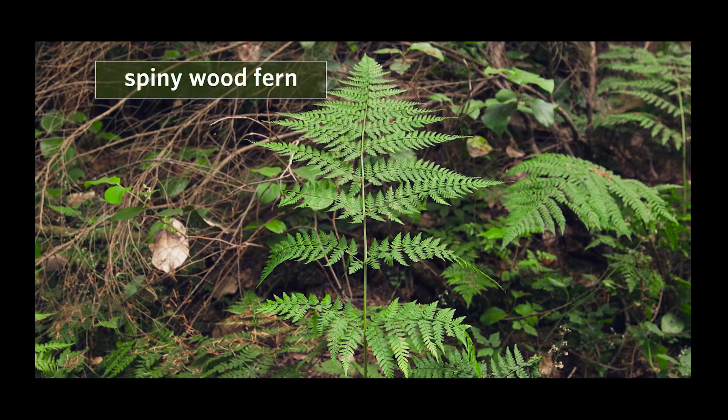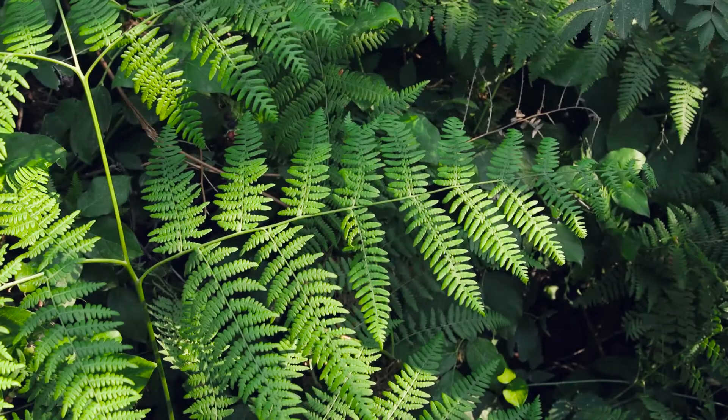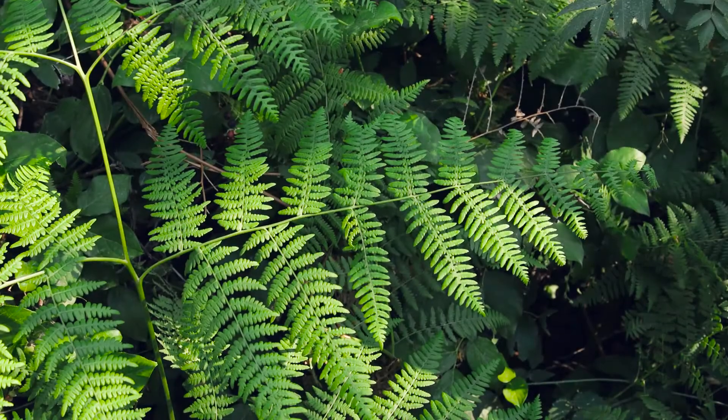You might confuse a bracken with a spiny wood fern, but that fern has a leaflet pair closest to the base that is asymmetrical. In bracken, it's symmetrical and triangular shaped.